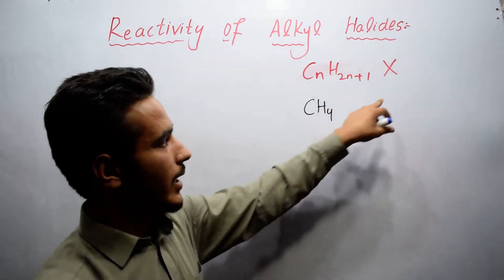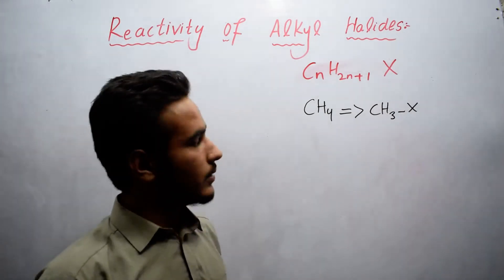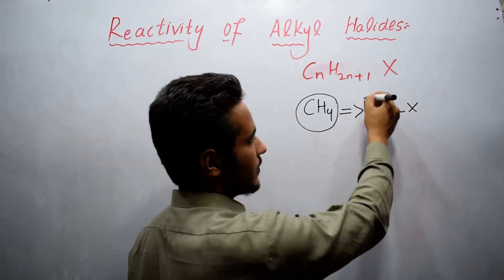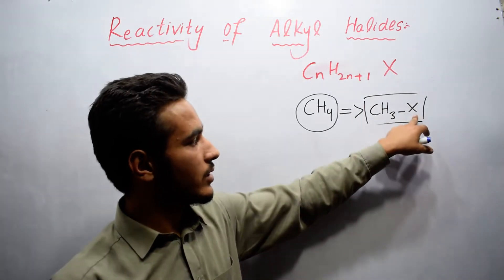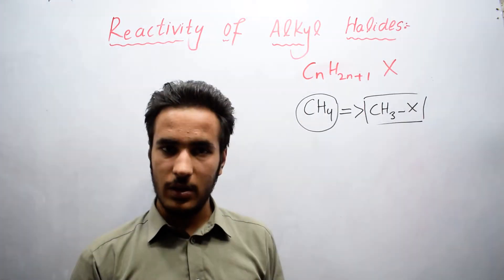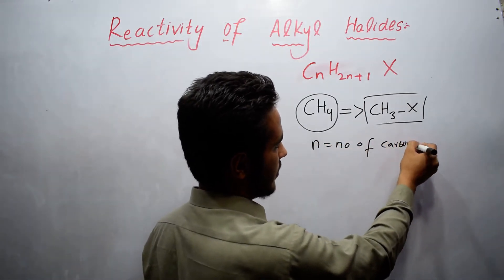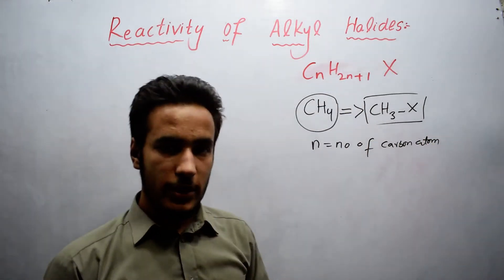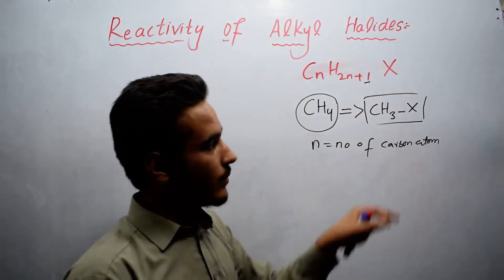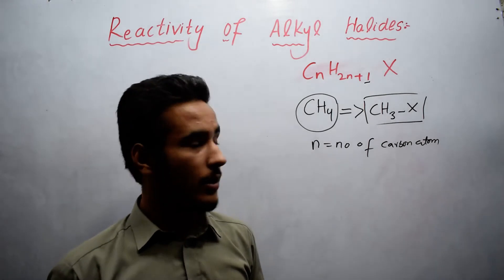For example, taking the first member of alkanes, CH₄, if we replace one hydrogen by a halogen atom, it becomes CH₃X. Alkanes have their own properties, but when we add the halogen, the whole property changes. So halogen is the functional group here because it completely changes the chemical properties of the organic compound. Here n represents the number of carbon atoms. In the general formula of alkanes we have CₙH₂ₙ₊₂, but here it is CₙH₂ₙ₊₁ because one hydrogen is replaced by X.